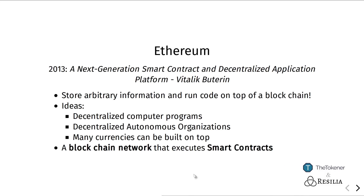In 2013, Vitalik Buterin published an academic paper about Ethereum. Ethereum improved on the ideas of Bitcoin by altering the blockchain so that it could store arbitrary information, including programming code — so you could run programs on top of the blockchain system. Buterin realized that you could use this to create decentralized computer programs, both financial in nature as well as computer games, and also voting applications to manage organizations in a decentralized or autonomous way.